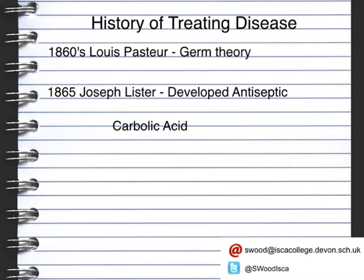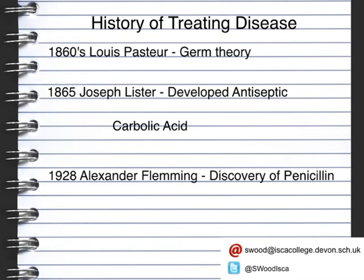The third and possibly most influential discovery was Alexander Fleming's in 1928. He discovered penicillin quite famously — what he was doing was growing bacteria, and he noticed that mould from a sandwich was actually killing some of the bacteria. Where the mould was, there was no bacteria growing. This was believed to be the first antibiotic, developed to treat bacterial infections, as the fungus was producing a chemical that killed the bacterial cells.